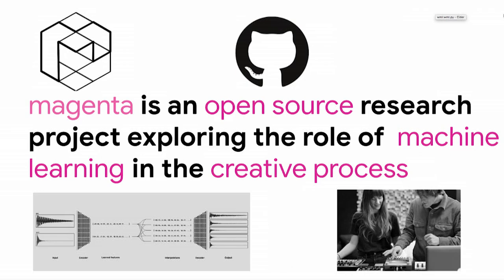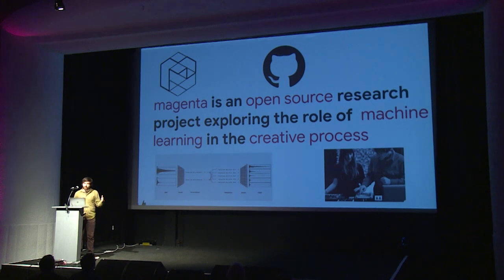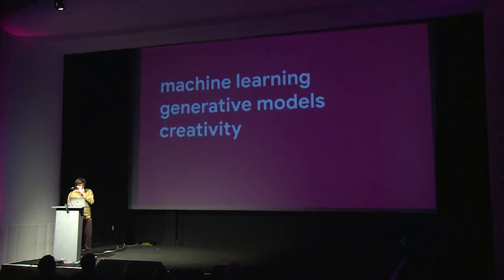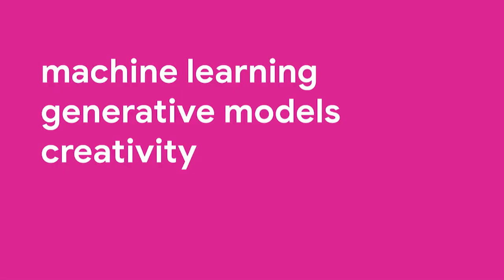So what does that mean? It means both doing fundamental machine learning research, publishing academic papers and going to those types of conferences, but also really importantly it means interfacing with the creative community — actually talking to musicians and other types of artists and seeing how the things we're developing in the research space might be useful to them in the creative space. I'm going to give a gentle introduction to machine learning, then talk about generative models, and then how we can use these as tools for creativity.